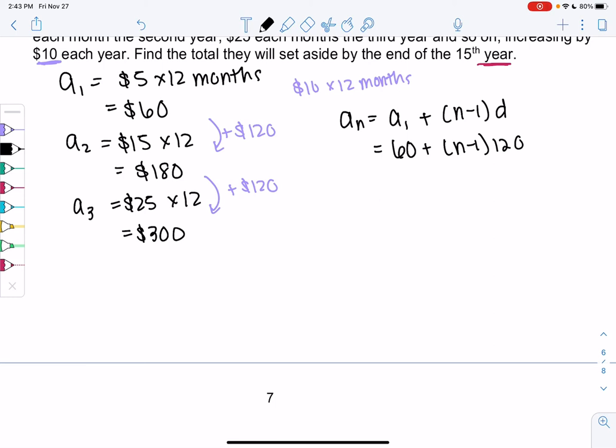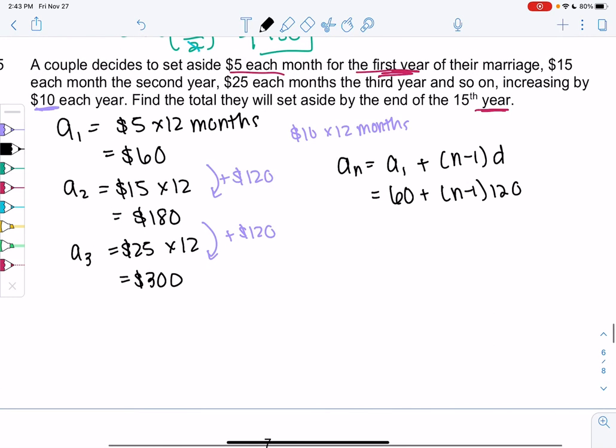So if we can figure out the amount the 15th year, then we can find the total by finding the sum. So in the 15th year, they're going to set aside 60 plus 15 minus 1 times 120. So go ahead and calculate that.